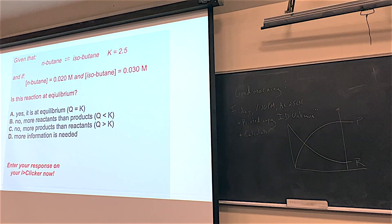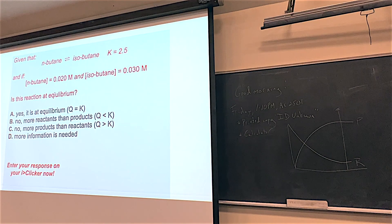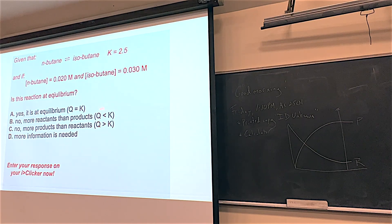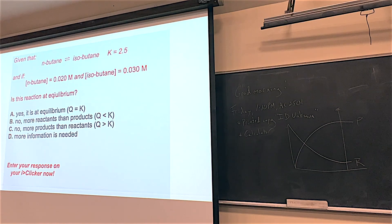Here's another example: n-butane = 0.020 mol/L, isobutane = 0.030 mol/L. Q = 0.030 / 0.020 = 1.5. Since 1.5 ≠ 2.5, we are not at equilibrium. Because Q (1.5) is less than K (2.5), we have too many reactants and the reaction will shift to the right toward products.